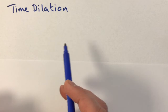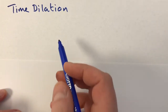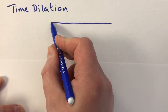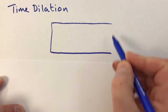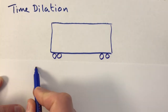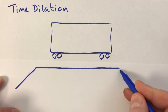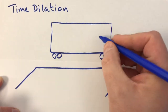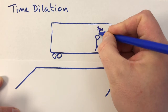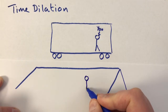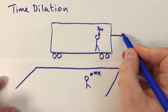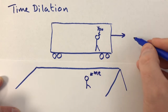One of those people is going to be you and one of those people is going to be me, so that we can keep track of who's doing what. Your story is traditionally told with you inside a train carriage, here passing a station — so let me draw the station platform. You are on the train and I am on the platform. Your train is moving, in this case to the right, with a velocity V.